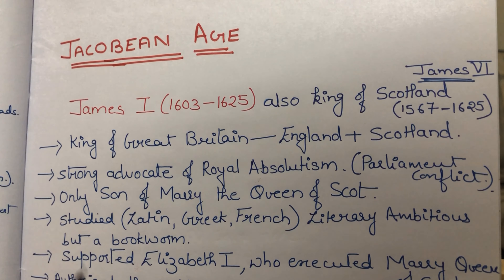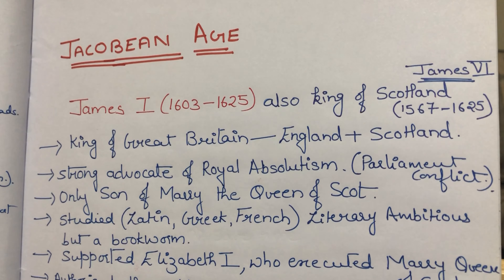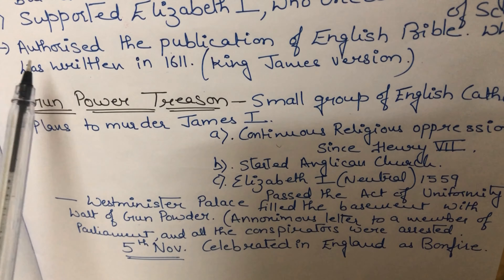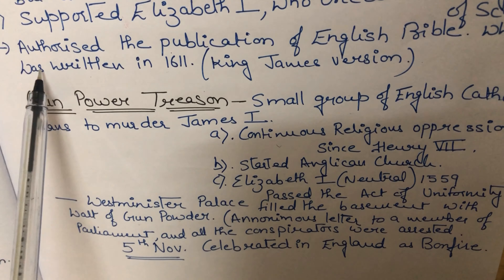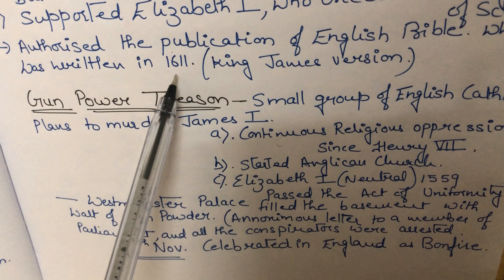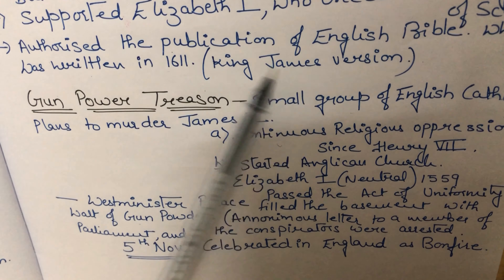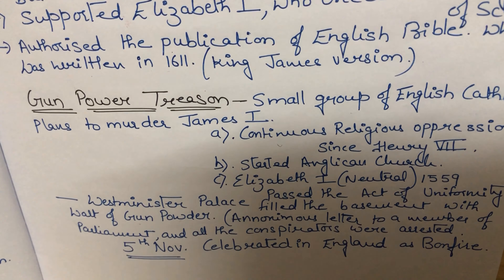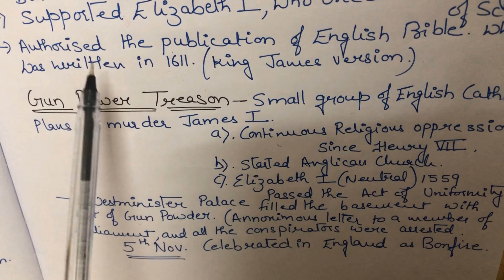So James I followed the footsteps of Elizabeth I. Now two important things happened during the Jacobean Age. First, King James I authorized the publication of the English Bible, the King James Bible, which was published in 1611. This is very important.